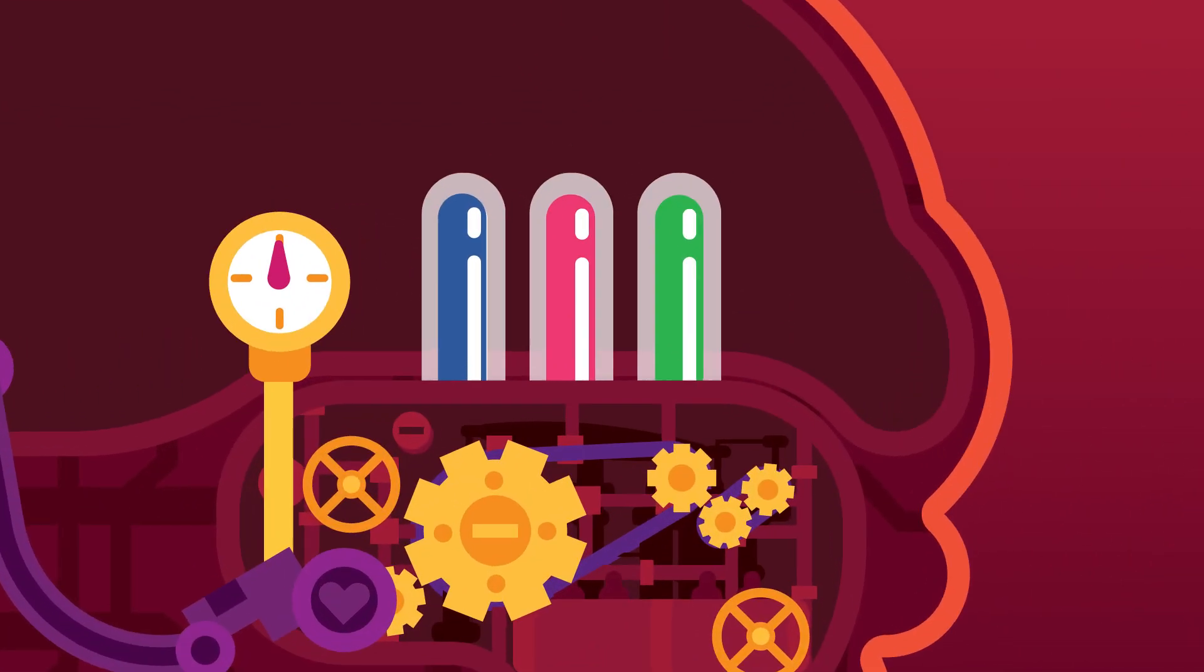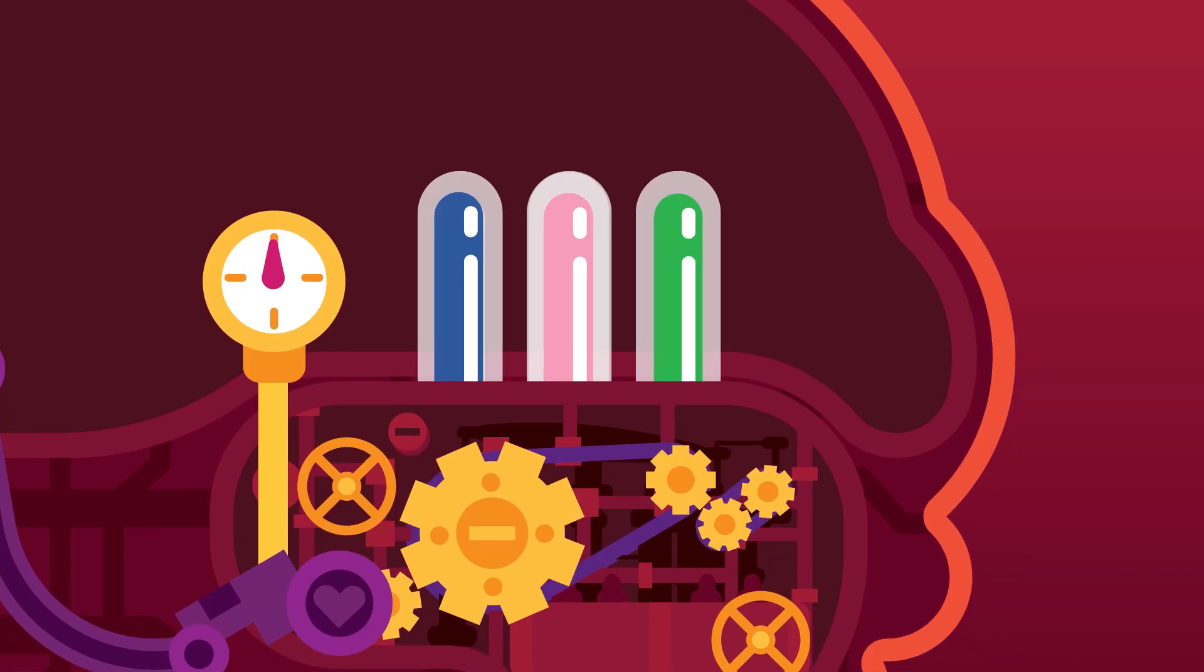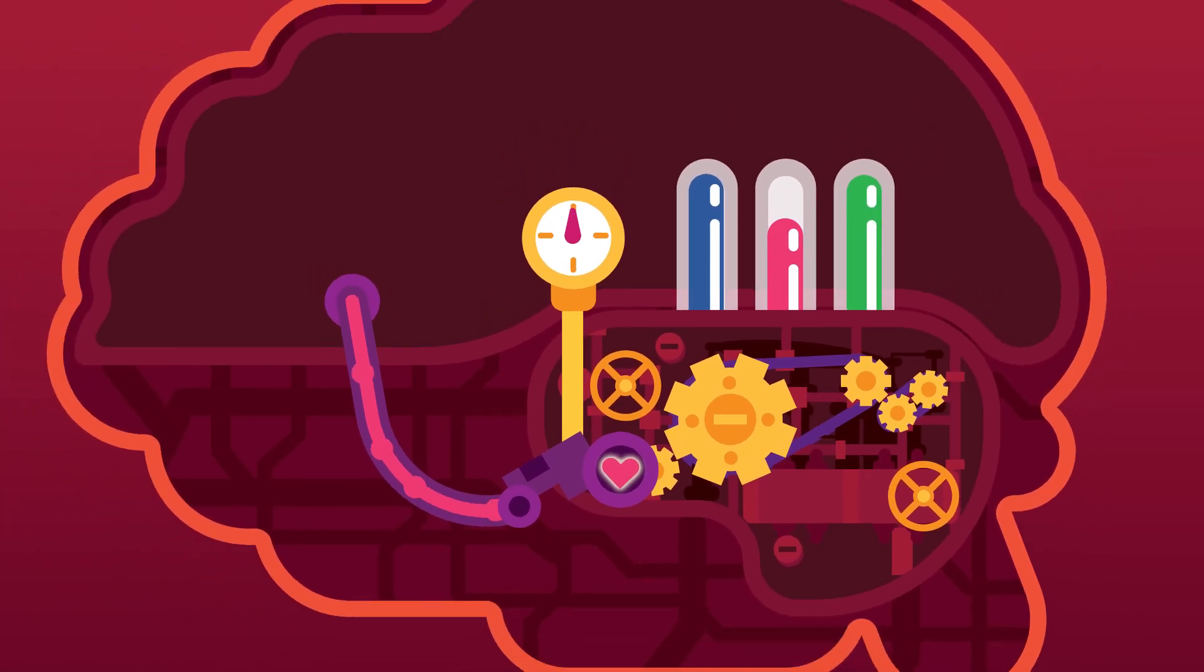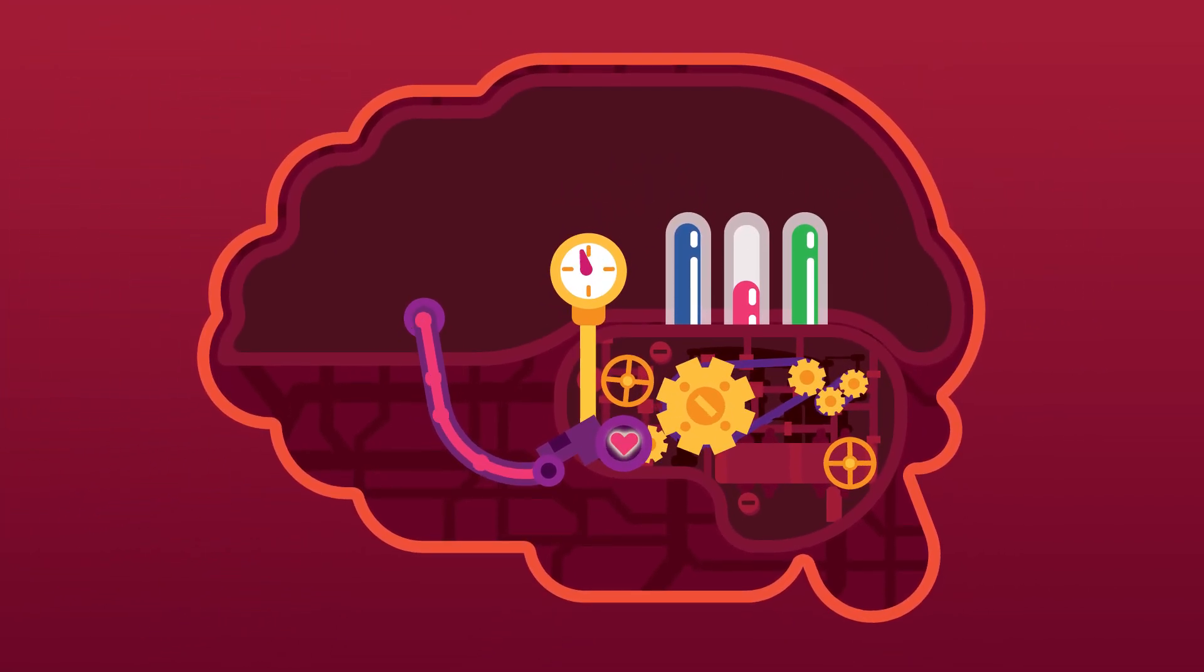Chemicals turn on and off certain parts of the brain. For the reward circuitry, it's dopamine. It's the main neurotransmitter that turns the reward circuitry on. The reward circuitry is the engine, and dopamine is the gas.